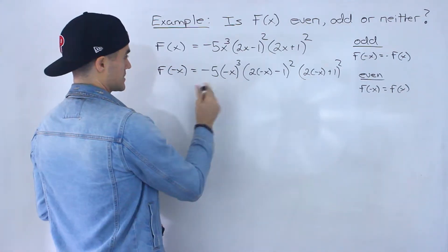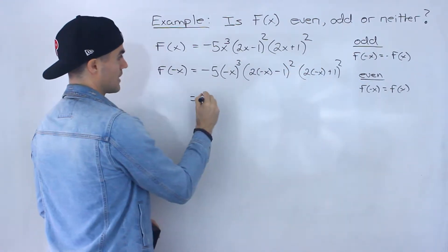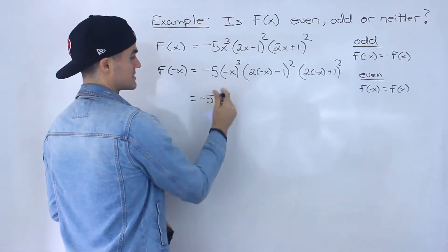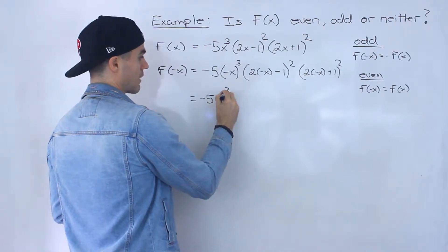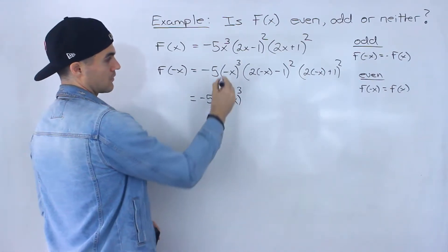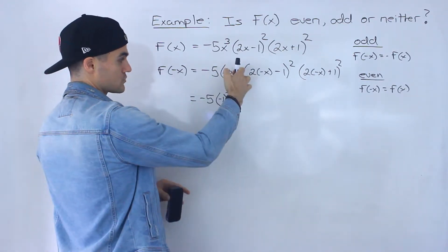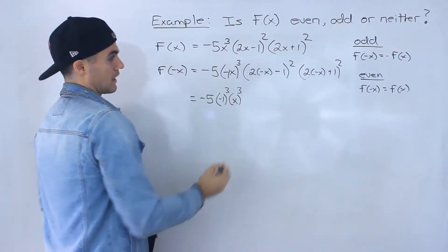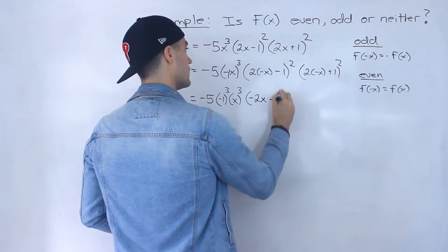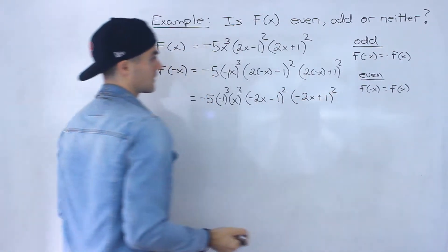Now we need to simplify this. This one's a little unique because we have these exponents we haven't dealt with yet, but they're actually not too bad. First off, negative x to the power of 3 ends up being negative 1 to the power of 3 times x to the power of 3, because there's like a negative 1 there, so everything in that bracket goes to that exponent. Over here, we'd end up with negative 2x minus 1 squared, and then negative 2x plus 1 squared.